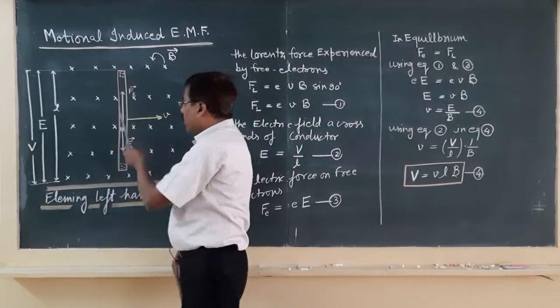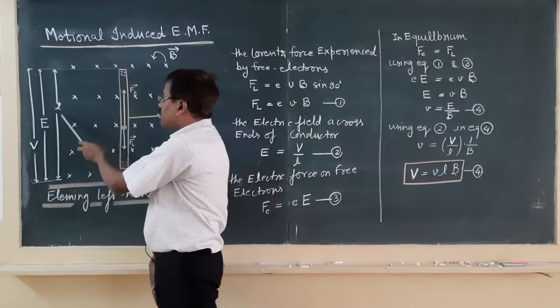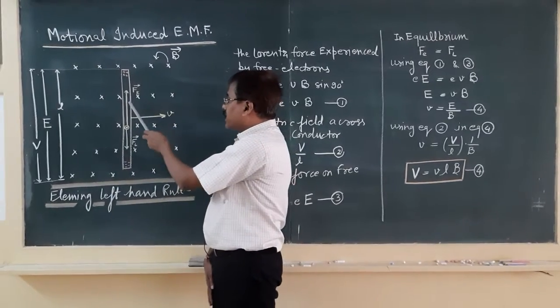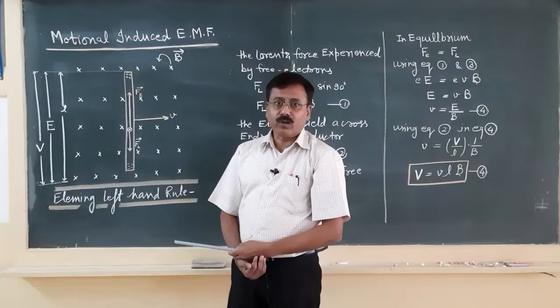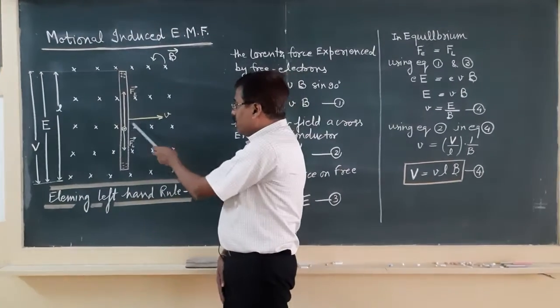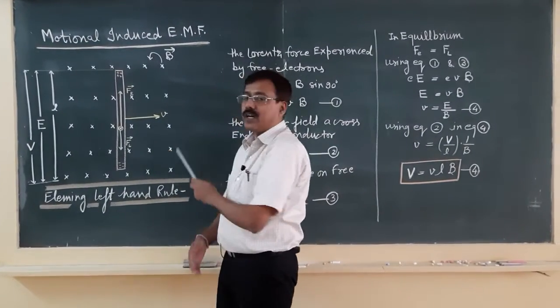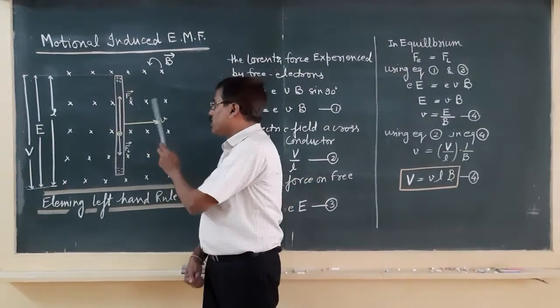Let the length of the rod be small l, and in the conductor it consists of a number of free electrons. So, along with the conductor, the free electrons are also moving with the same velocity v.